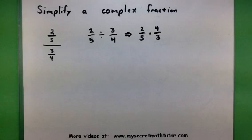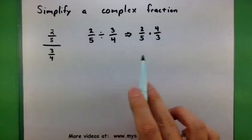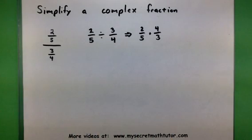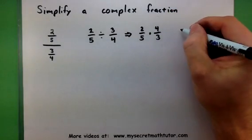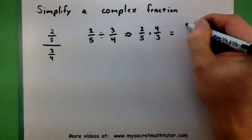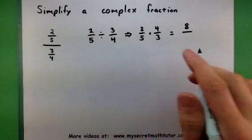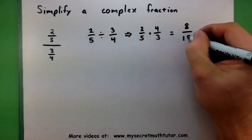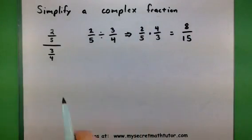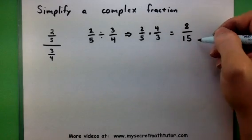There we go. And now, look at that. We've turned our complex fraction into just a multiplication problem. Let's go ahead and multiply across the top and get 8. Multiply across the bottom and get 15. And there you go. So, this entire complex fraction just simplifies into 8 over 15.